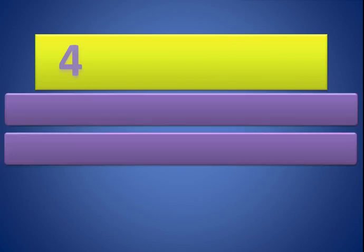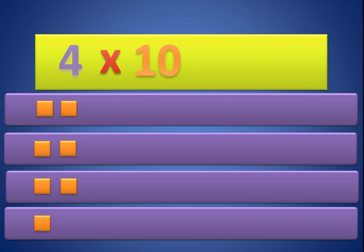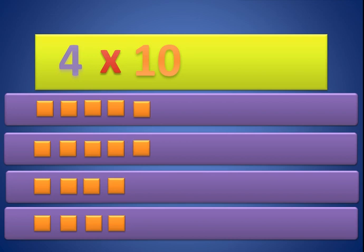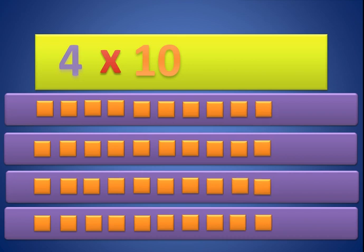Now 4 times 10. We need 4 groups — 1, 2, 3, and 4. We need 10 in each group — 1, 2, 3, 4, 5, 6, 7, 8, 9, and 10. So 4 times 10 equals 40.